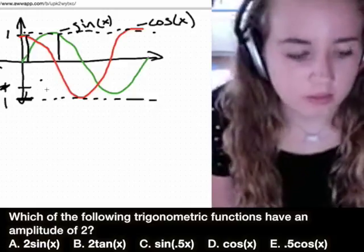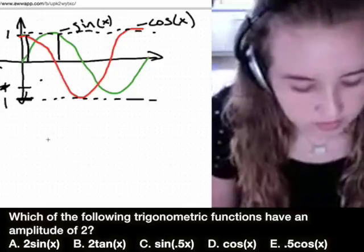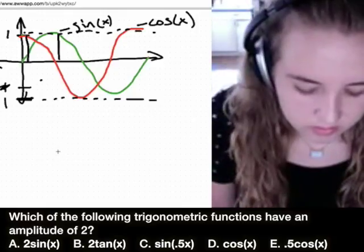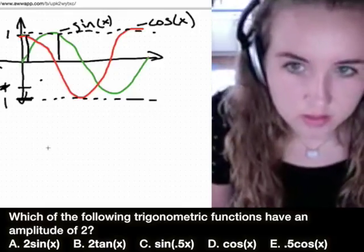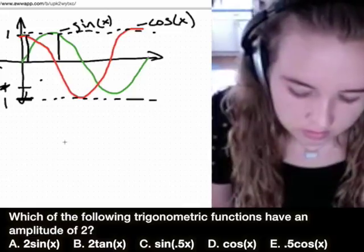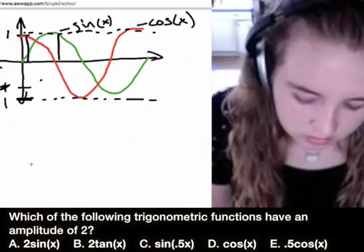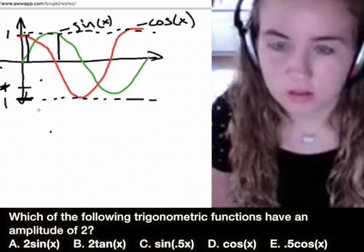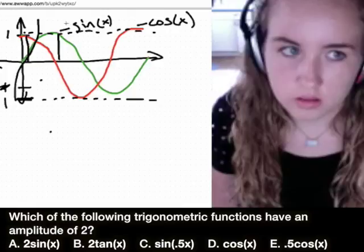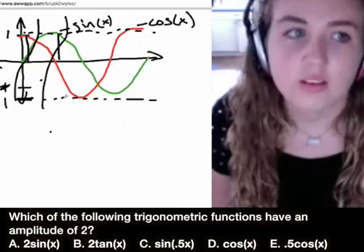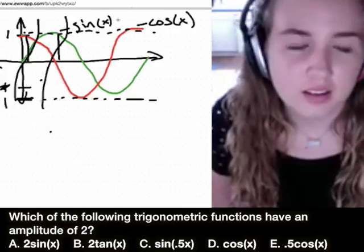All right, so sine of x and cosine of x have an amplitude of one. Tangent of x is like a crazy function - we don't care. If you remember that function is something like this, like these really weird things.